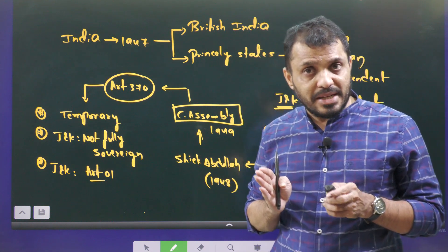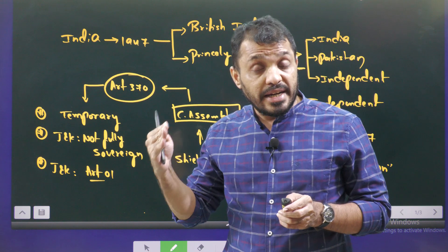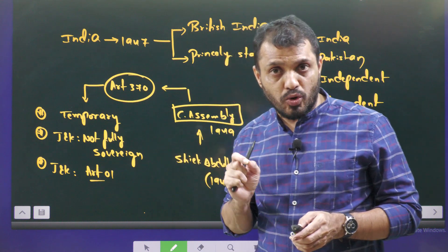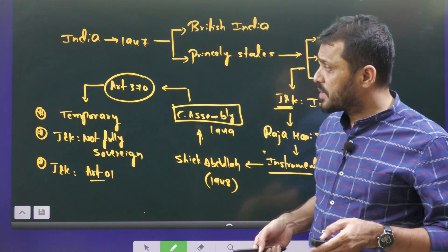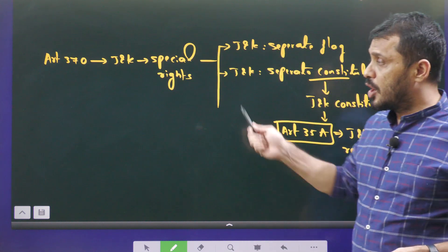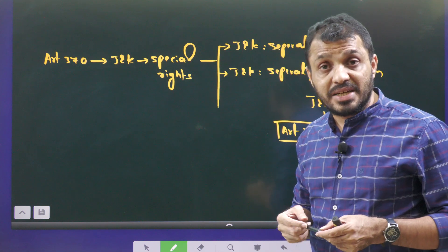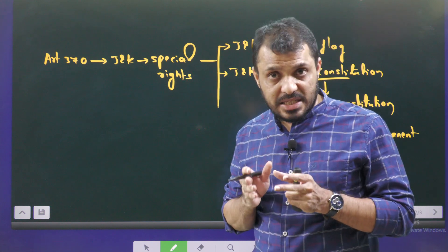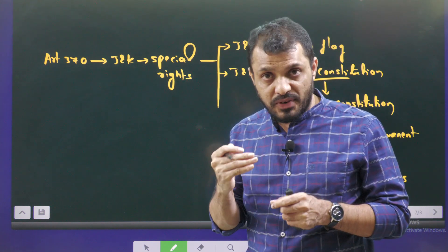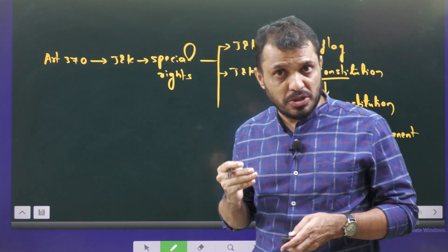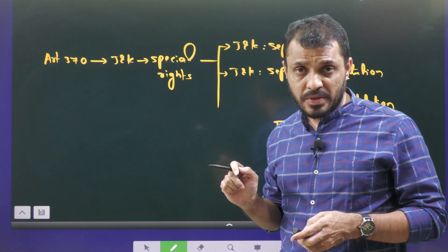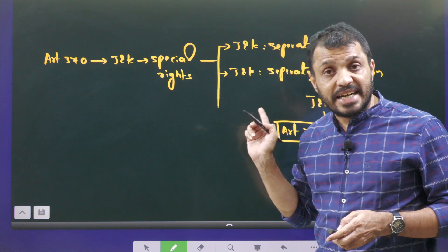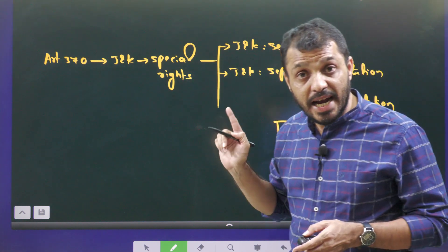Article 370 came into existence in 1950. In 1952, there was an agreement between the Jammu & Kashmir government and the Delhi government, which resulted in Article 35A being inserted into the Jammu & Kashmir Constitution in 1954. Article 370 is a temporary provision giving special rights to Jammu & Kashmir, including a separate flag, separate citizenship, and a separate constitution.